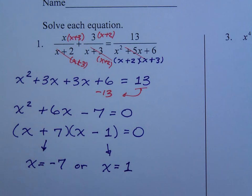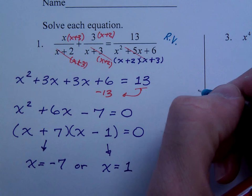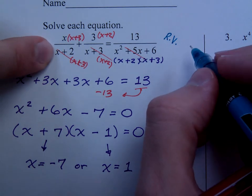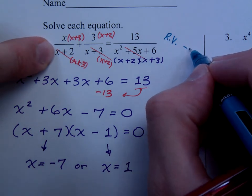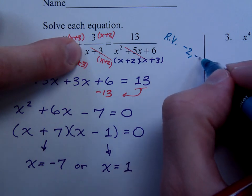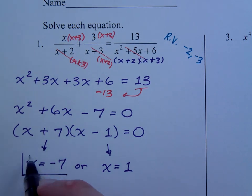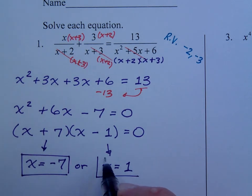Remember with these rational equations, you have to watch out for restricted values. What are those values that make the denominator equal 0? x plus 2 equals 0 when x is negative 2. x plus 3 is equal to 0 when x equals negative 3. As long as I don't have a solution that's a restricted value, these guys should work out very nicely for me.